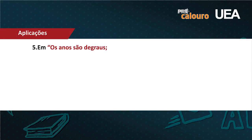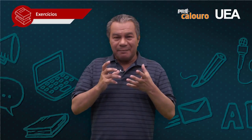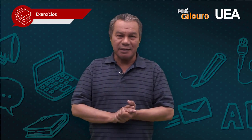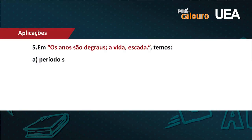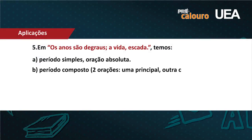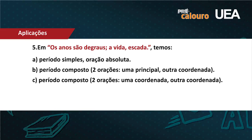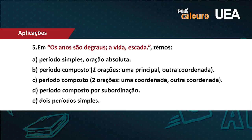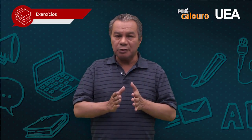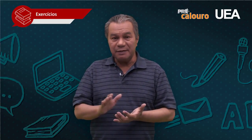Vamos ao quinto exercício. Em 'os anos são degraus; a vida, a escada', as alternativas perguntam se o período é simples, composto com duas orações coordenadas, composto por subordinação, ou dois períodos simples. Quero começar com a letra E, que é absurda: o ponto e vírgula não marca fim de período — olha que depois recomeça com letra minúscula, não com maiúscula. Para que haja dois períodos simples, entre um e outro tem que haver o recomeço com letra maiúscula. Eliminamos a letra E.